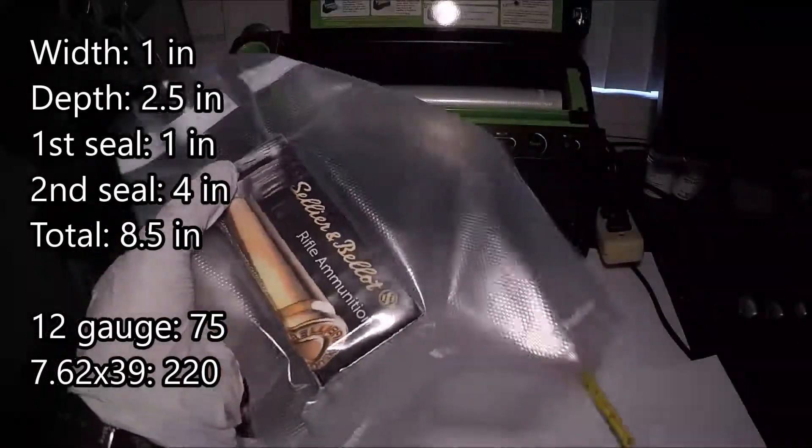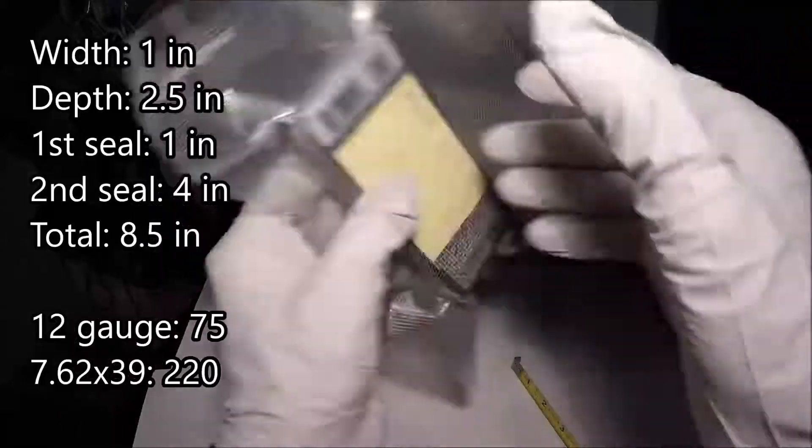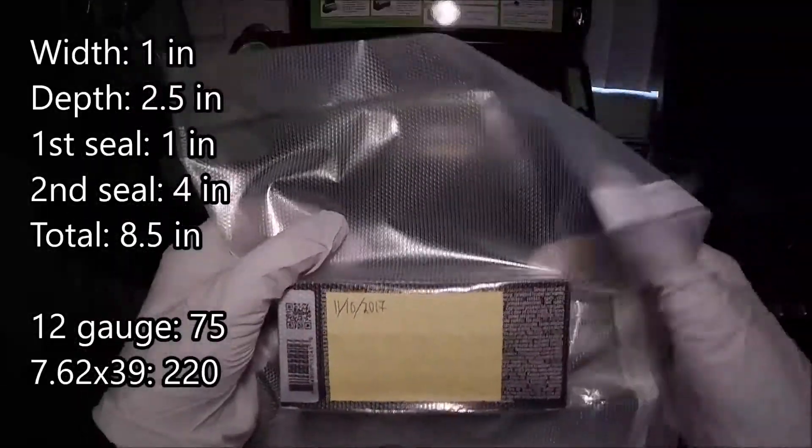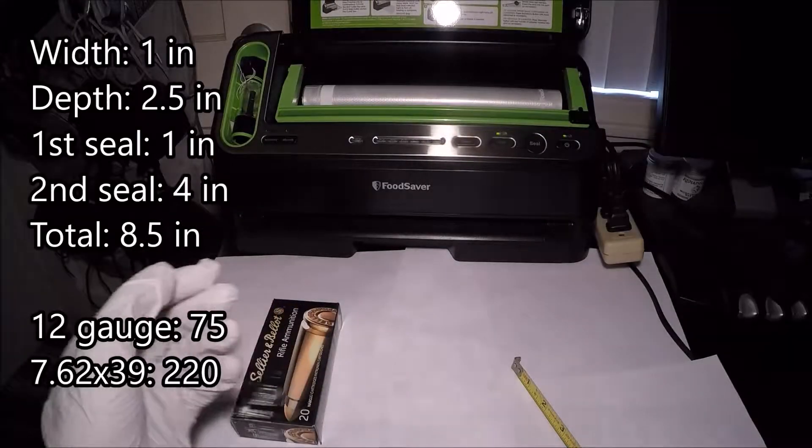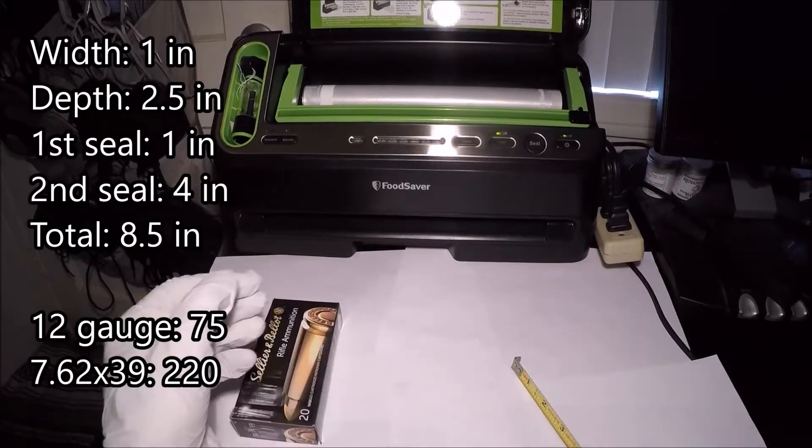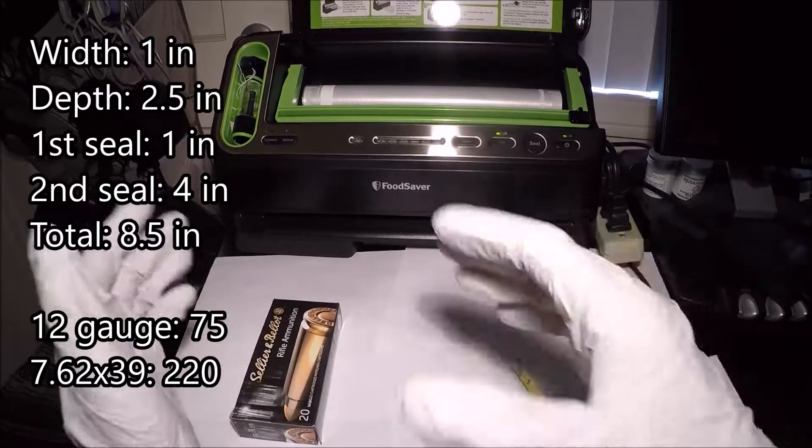This is the previous box of ammo that I vacuum sealed in the previous video, so let's go ahead and put that aside. With those four measurements in mind, those add up to about eight and a half inches. That's how much you're going to want to measure out on your roll.